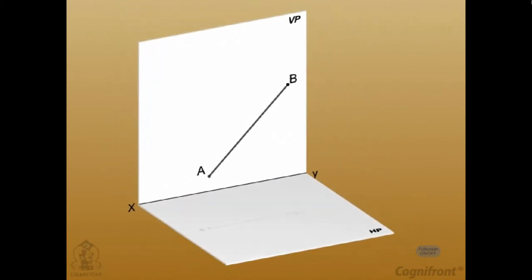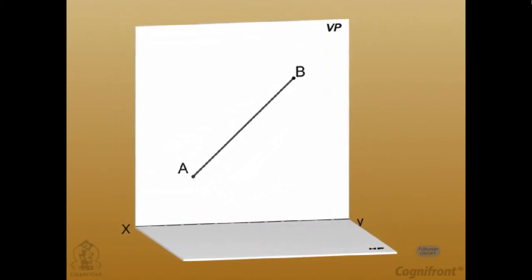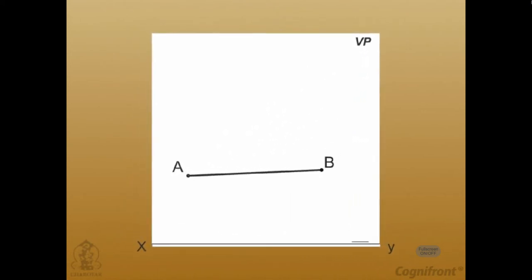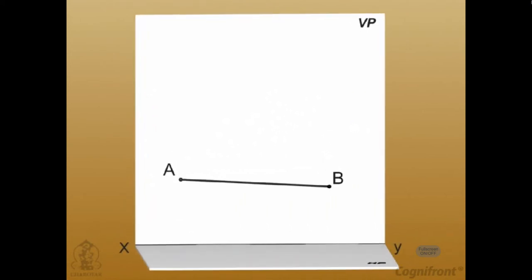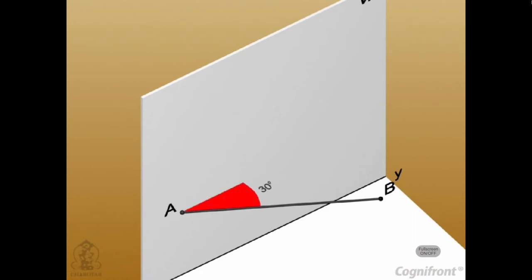Now, the opposite case. The line AB is assumed to be parallel to HP and inclined to VP by the angle 30 degrees.